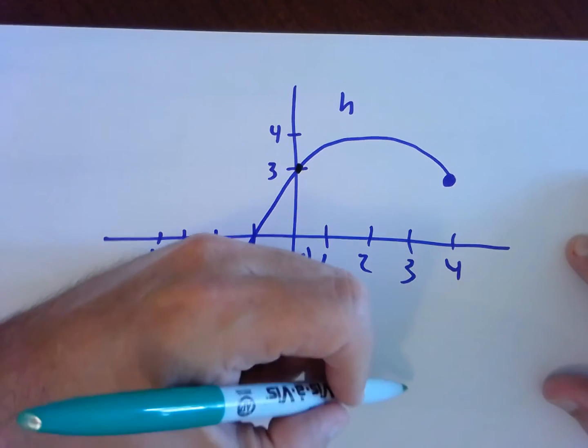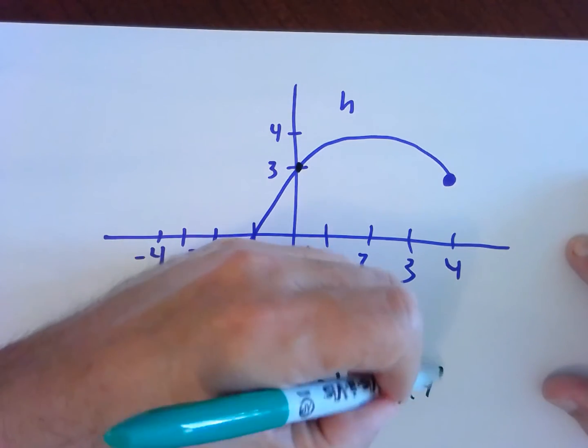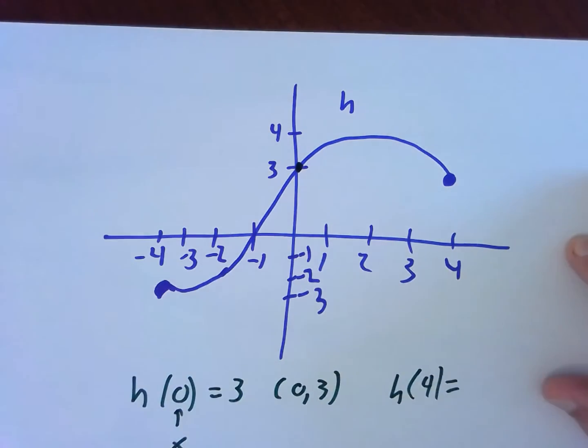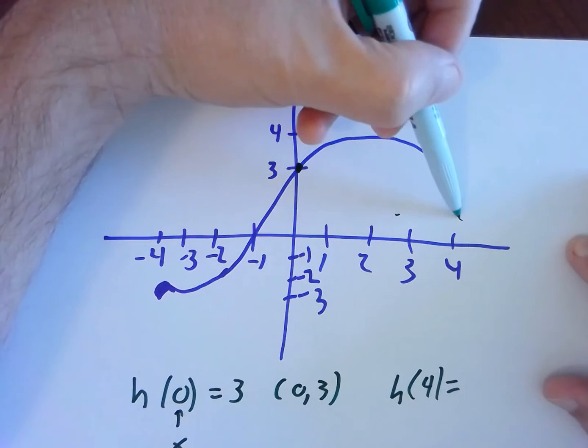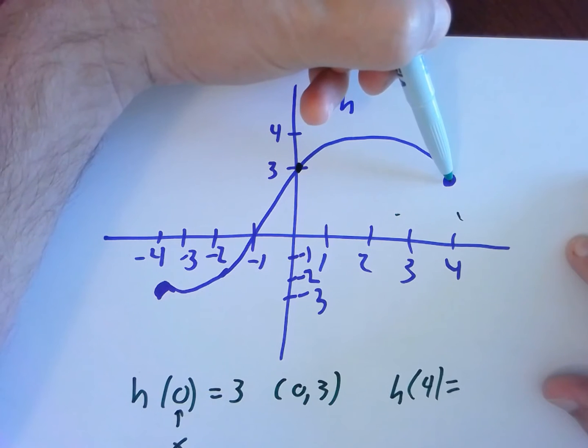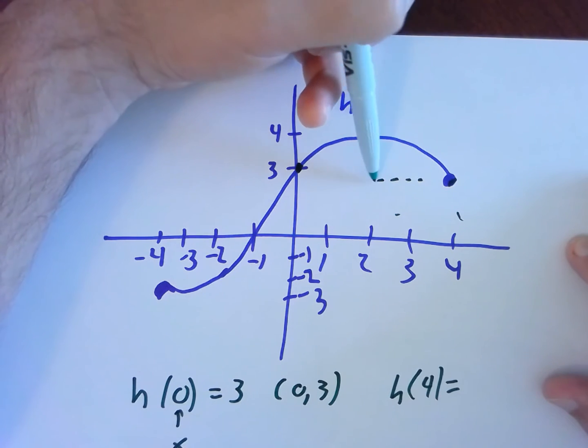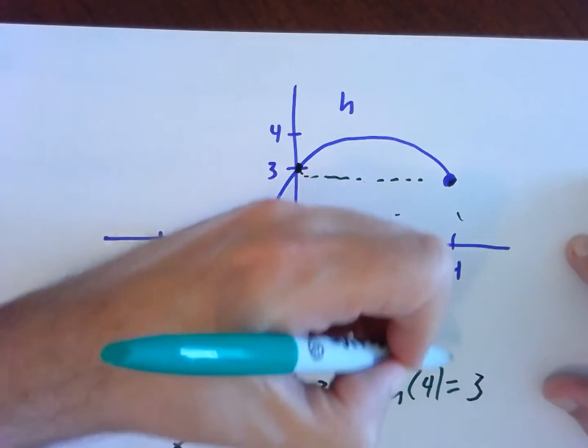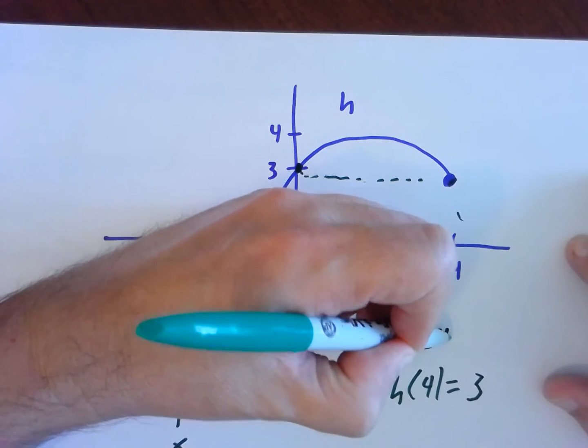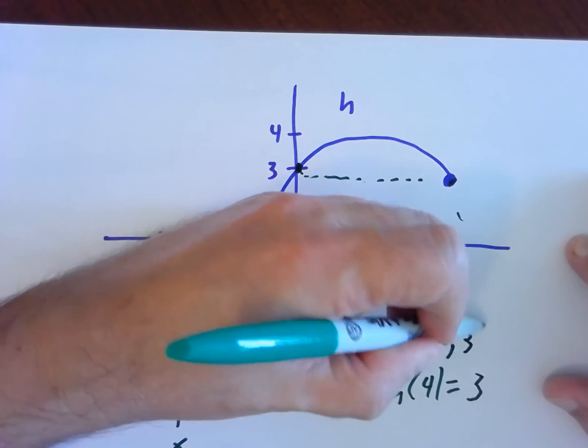Okay, what about h of 4? So we look over here when x equals 4, we find the corresponding point on the graph. We're talking about that point right there. And we can see y equals 3. That's the point 4 comma 3.